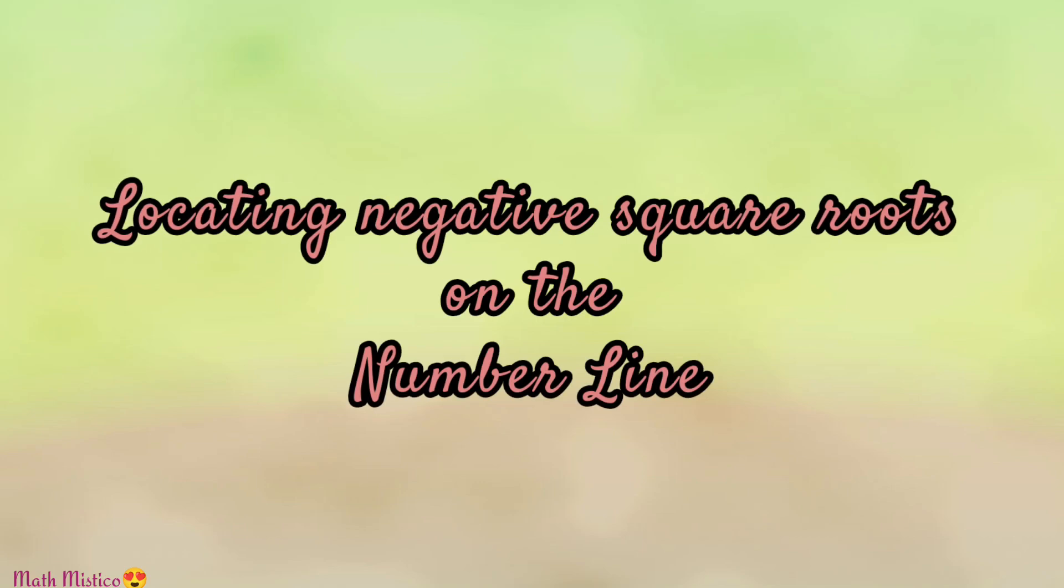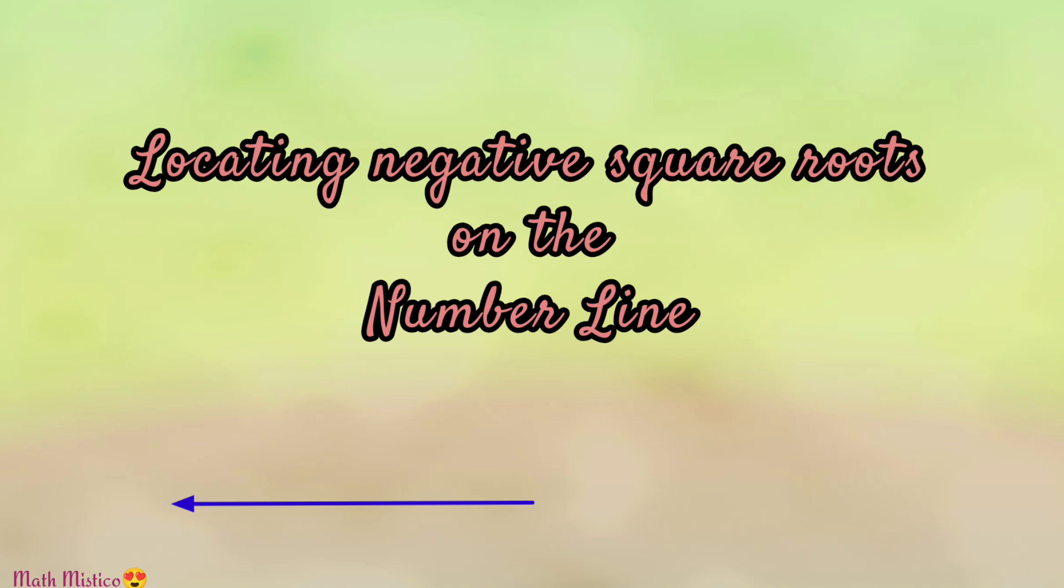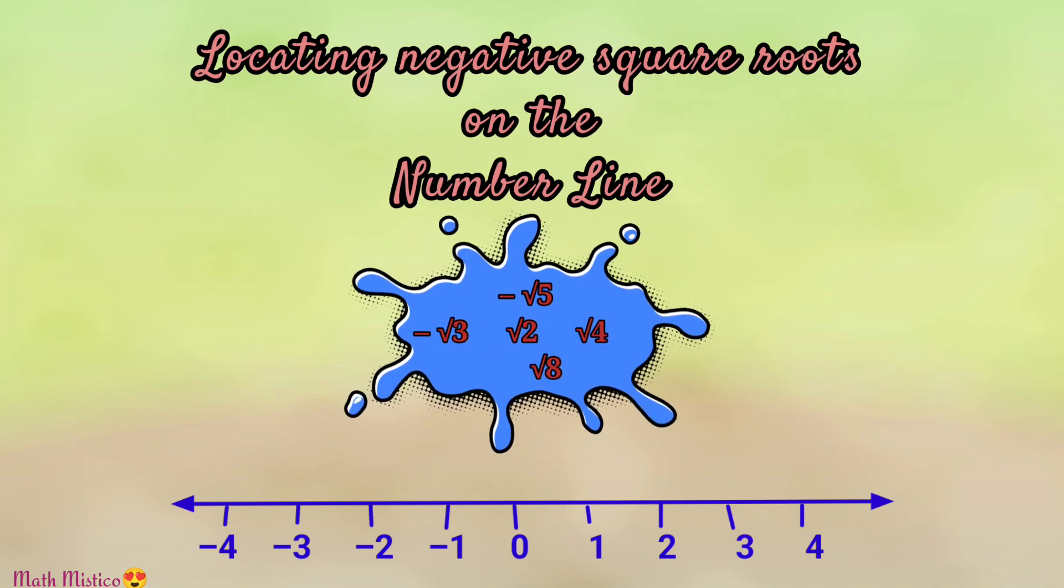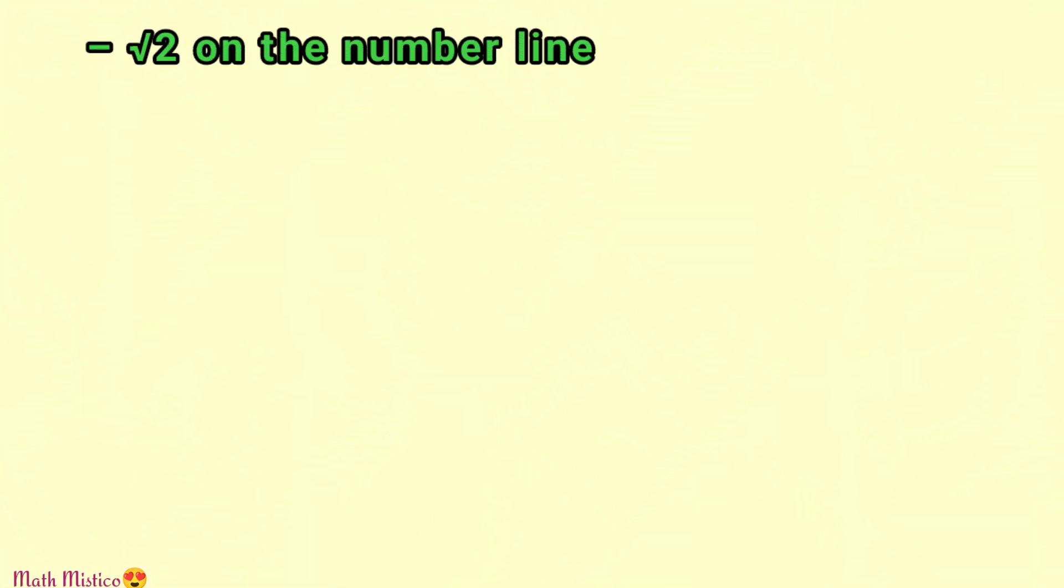In this video we are going to discuss how to represent negative roots on the number line. The method of representing negative roots is the same as that of positive roots. The only difference is that negative numbers are on the left side of zero, so we have to move in the opposite direction. Let's start with the simplest number, minus root 2.